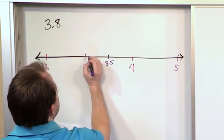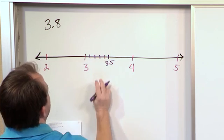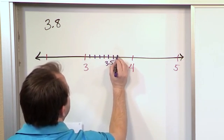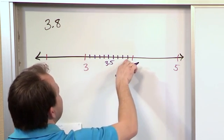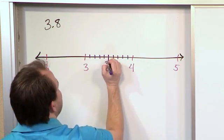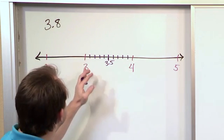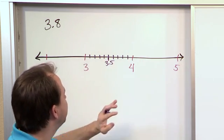So what we have then is we have 3.1, 3.2, 3.3, 3.4, and then we have our 3.5, and then we have 3.6, 3.7, 3.8, 3.9, and then after 3.9 you roll over to 4.0. So basically what you have is when you're looking at the tenths place, you can divide between any two numbers, 3 and 4, we can divide it into 10 spots.